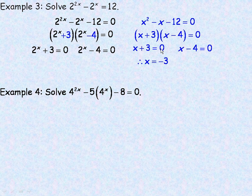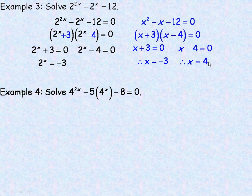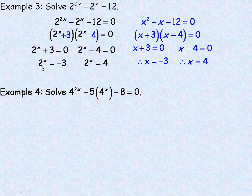From 2 to the x plus 3 equals 0, we get 2 to the x equals negative 3. Notice it's 2 to the x equals negative 3, not x equals negative 3. Now, 2 is a positive base raised to some exponent — it doesn't matter what that exponent is, positive, negative, or zero — you cannot have a power of a positive base give you a negative result. It's just not possible, so there is no solution to that part.